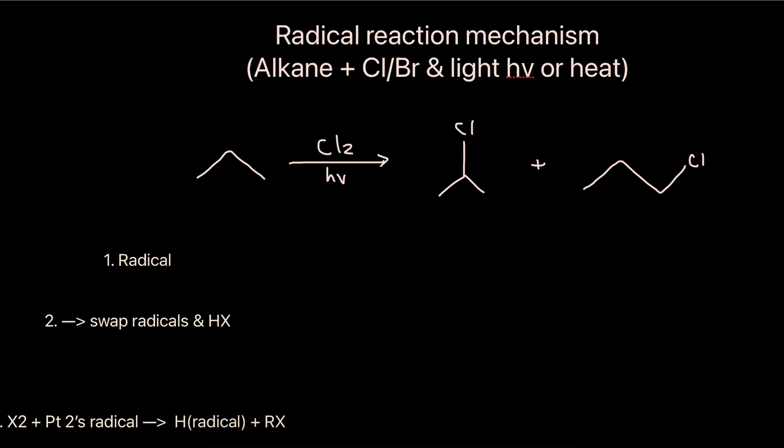When the question gives you an alkane, react it with chlorine or bromine under light (written as hν) or heat (written as a triangle). This is a sign that you will need to write out the three-step mechanism that involves a radical reaction.